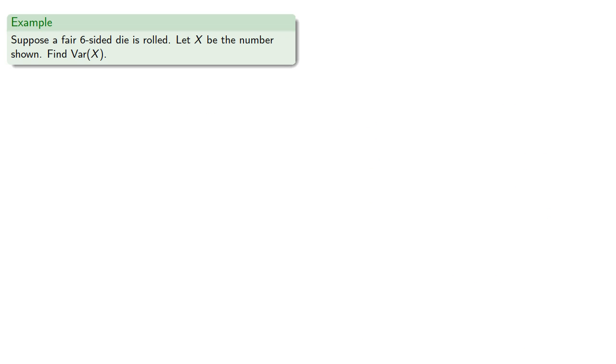So suppose our sample space consists of equally likely outcomes, like having a fair six-sided die roll. While we could calculate the variance as the expected value of the square of the difference between the random variable and the mean, remember that the variance can also be found by the difference between the expected value of the square minus the square of the expected value.